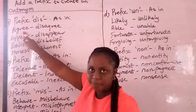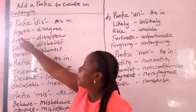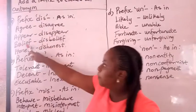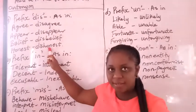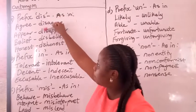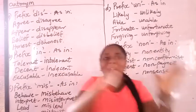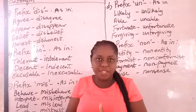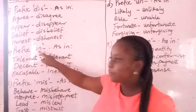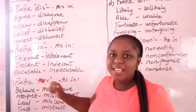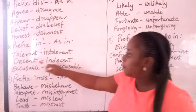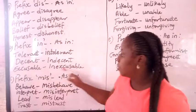The first prefix is "dis-". When we add "dis" to some words, it makes them the opposite. Examples: agree/disagree, appear/disappear, believe/disbelieve, honest/dishonest. The second prefix is "in-". When we add "in" to some words it makes them opposite in meaning. Examples: tolerant/intolerant, decent/indecent, excusable/inexcusable. Remember, prefixes are words added before a base word.